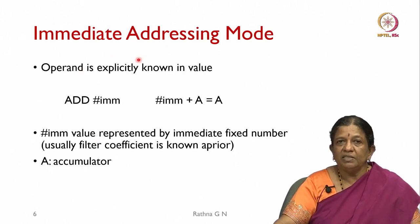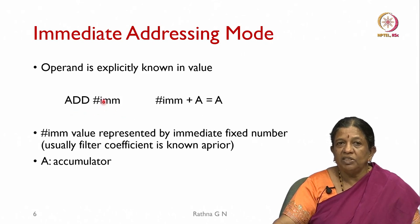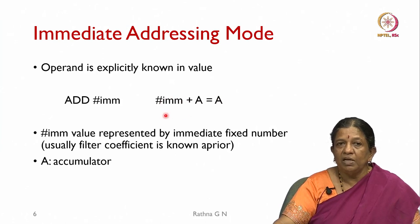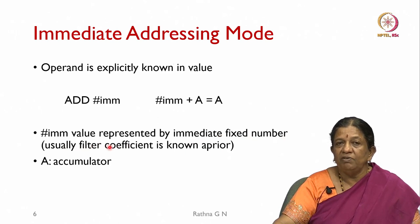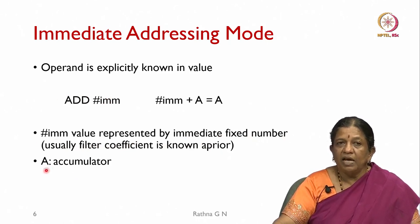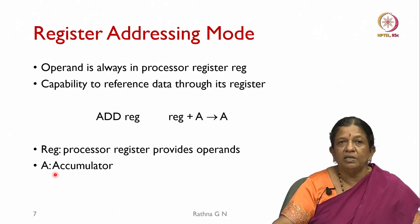In immediate addressing mode, when we want to add a value directly, we write 'ADD #immediate_value', which adds that value to our accumulator and stores the result in the accumulator. The hash symbol represents the immediate fixed number. If we know the filter coefficient a priori, we can give it as an immediate value. 'A' is the accumulator in this notation.